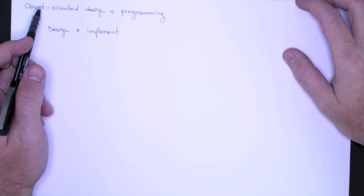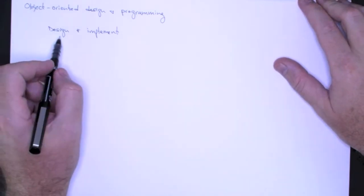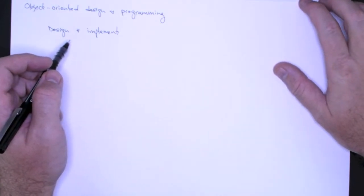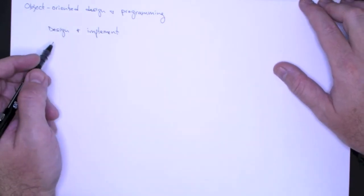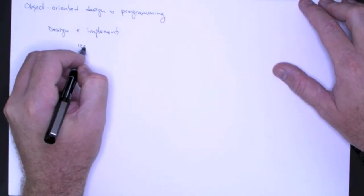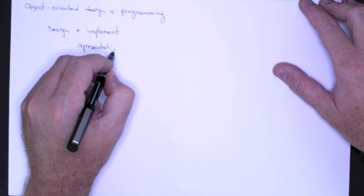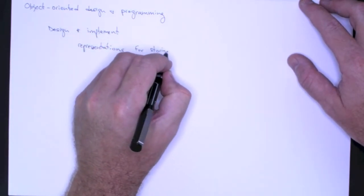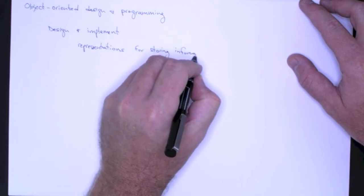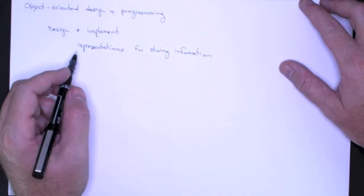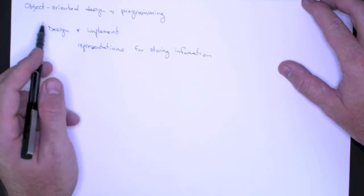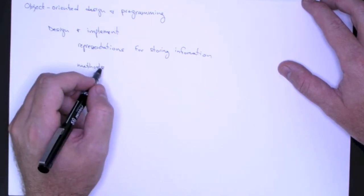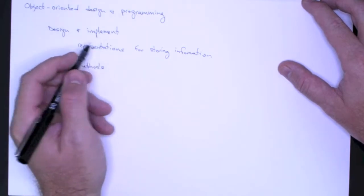Okay, we're going to talk about object-oriented design and programming and two main activities: the design and implementation. And usually it breaks down into the design and implementation of representations, usually these are representations for storing information. And then once we've stored information, then we design and implement routines or methods. And what these methods do is they let us manipulate this stored information.